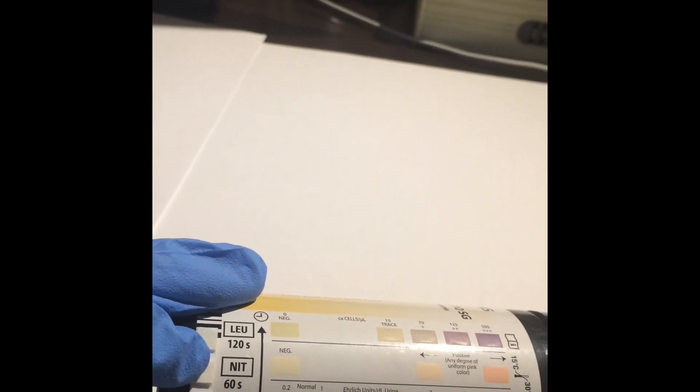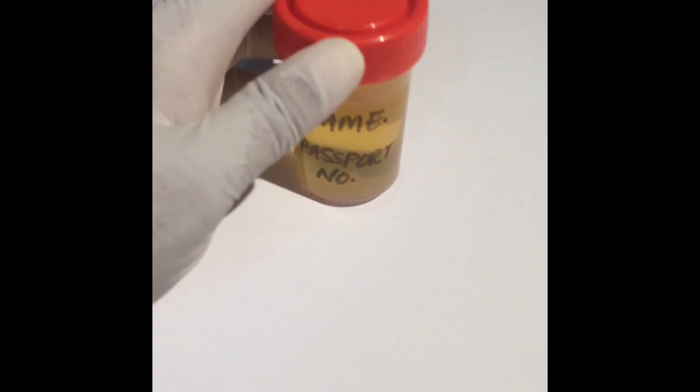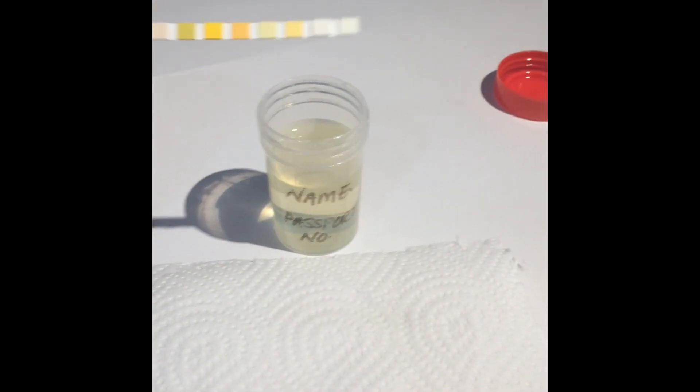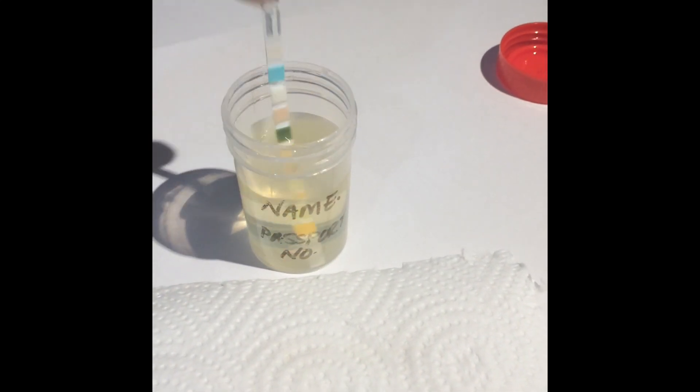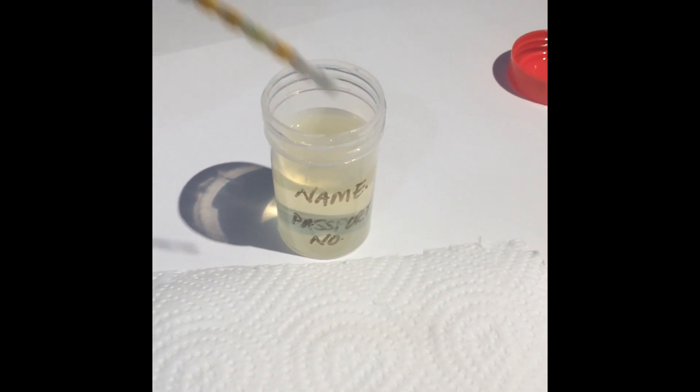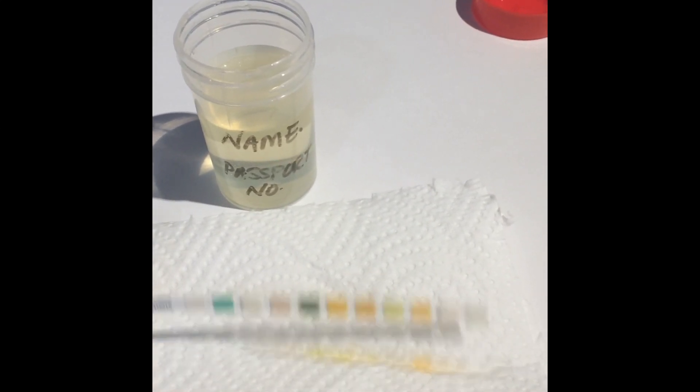Here is how to do the test. Ensure the two identifiers are correct: name and date of birth. Then mix the sample by inversion. Dip the dipstick in the sample till all the squares have touched the urine and dab out the excess urine on a paper towel or gauze.